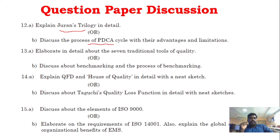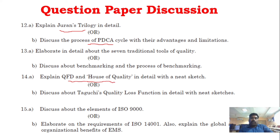The 13th question covers 7 traditional tools of quality — this is a repeat question. Benchmarking is also very important. The 14th question covers QFD and house of quality, and also Taguchi's Quality Loss Function. For Unit 5, ISO 9000 elements and ISO 14000 — organization benefits and elements — all of this is good to study.